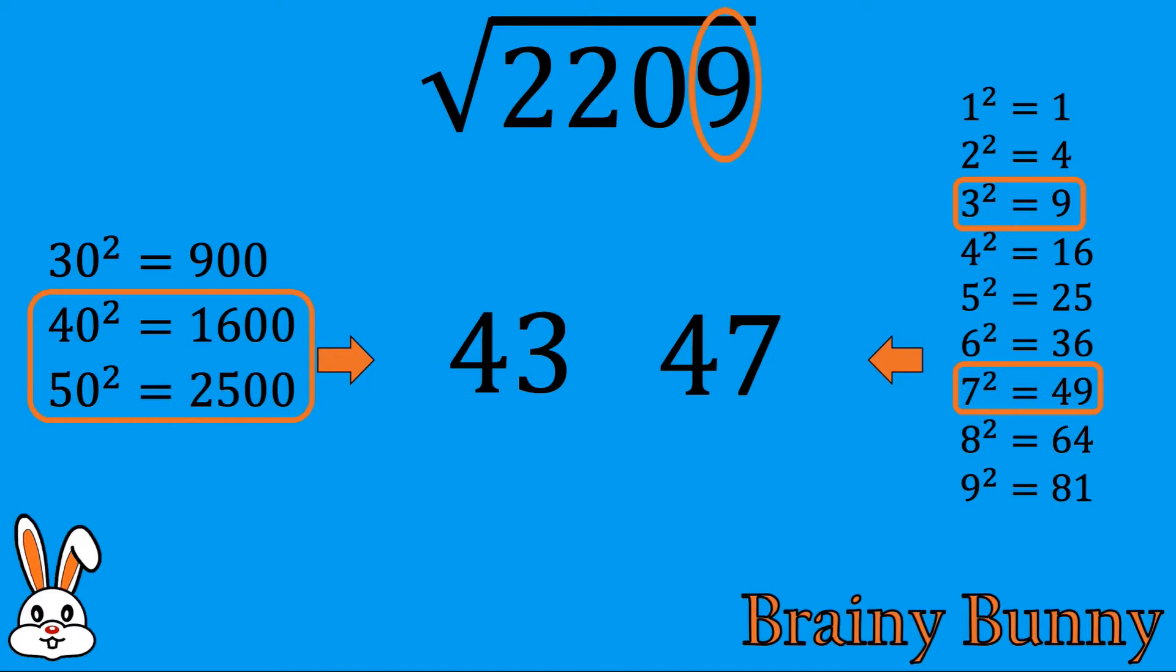For the last step, we notice that 2209 is closer to 2500 compared to 1600. So, our answer for the square root of 2209 is 47.